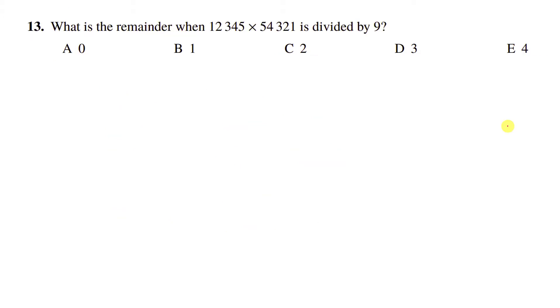Okay, what is the remainder when 12345 times 54321 is divided by nine? Now this is also a question where you could just do it and it will be horrible and a mess. So surely there is a nicer way.